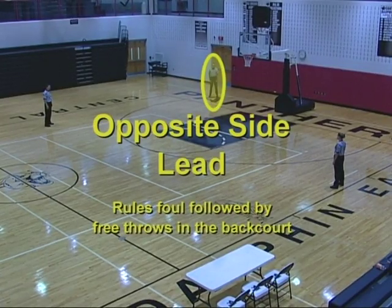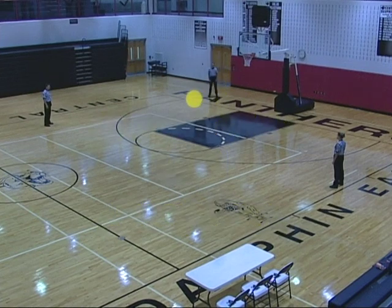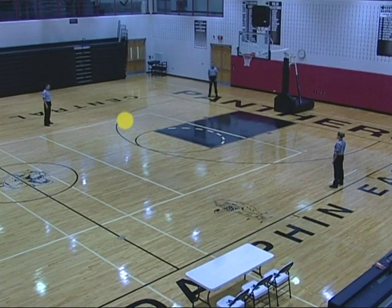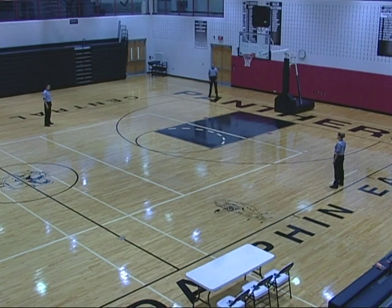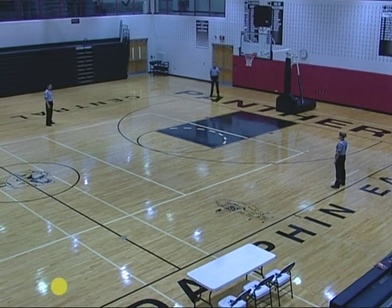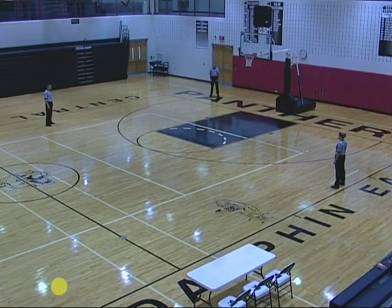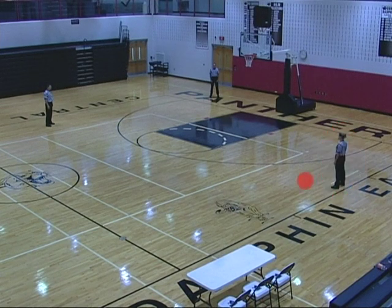Opposite side lead rules foul, followed by free throws in the backcourt. Proceeds to the reporting area, reports the foul, and becomes the opposite side center. Opposite side trail becomes table side lead and handles the free throws. Table side center becomes table side trail.